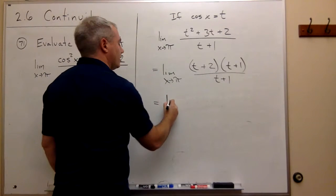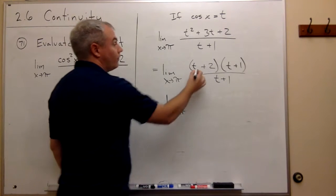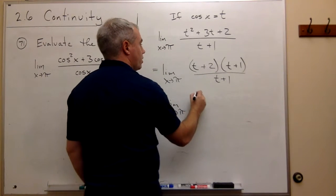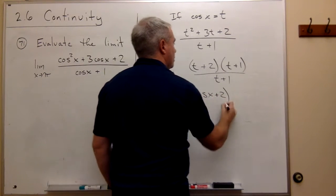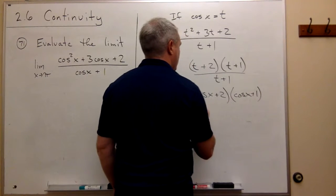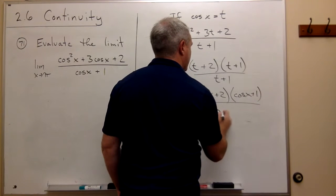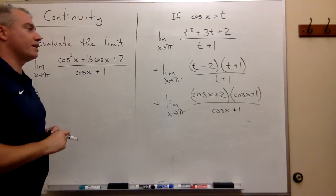Let's rewrite it. This is the limit as x goes to pi of t plus 2 which is cosine of x plus 2, times t plus 1 which is cosine of x plus 1, divided by cosine of x plus 1. So I just plugged back in for t again.